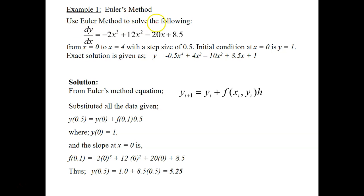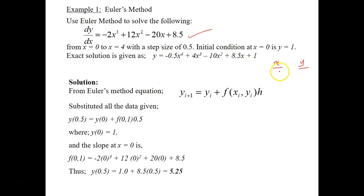Use Euler's method to solve the following: given a derivative from x equals 0 to x equals 4, with a step size of 0.5. The initial condition is x equals 0, y equals 1. The exact solution is also given.